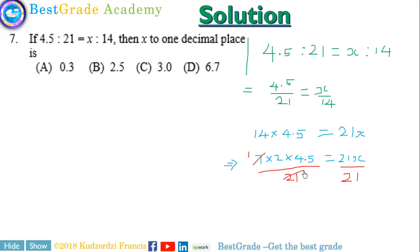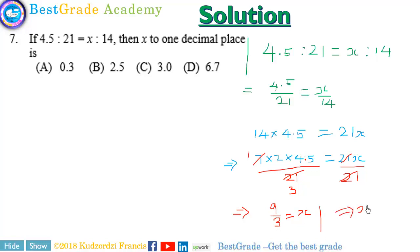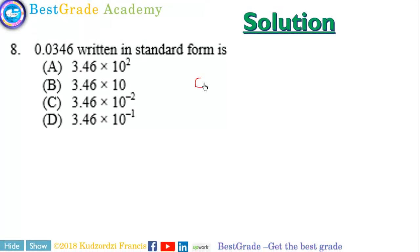7 goes into 21 three times, so we are left with 2 times 4.5, and that gives us 9 over 3, which is 9.0 over 3. This gives us x equal to 3.0. So that is the correct answer.